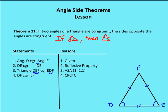Theorem 21 is the other side of the same coin: if two angles of a triangle are congruent, then the sides opposite them are congruent. The shorthand is: if angles, then sides. Here we are given that angle D is congruent to angle E, the diagram is marked up, and DE is congruent to itself. Triangle DEF is congruent to triangle EDF — the same triangle in a different orientation — by angle-side-angle.